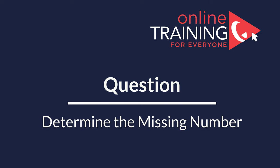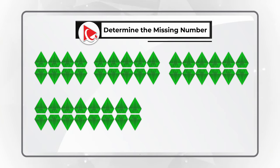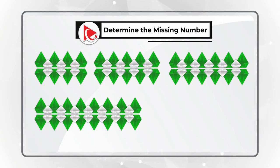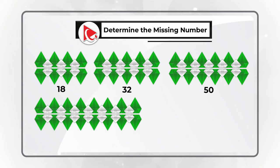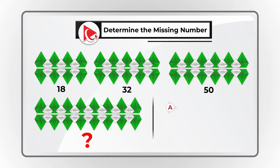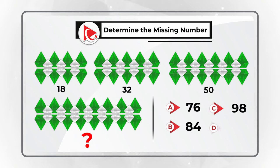Here is a very interesting problem which tests your analytical skills. You're presented with multiple diamond groups, each having green diamonds as well as gray diamonds. Underneath each diamond group there are numbers: 18, 32, 50, and then the missing number. You can select the missing number from four possible choices: Choice A: 76, Choice B: 84, Choice C: 98, and Choice D: 100.